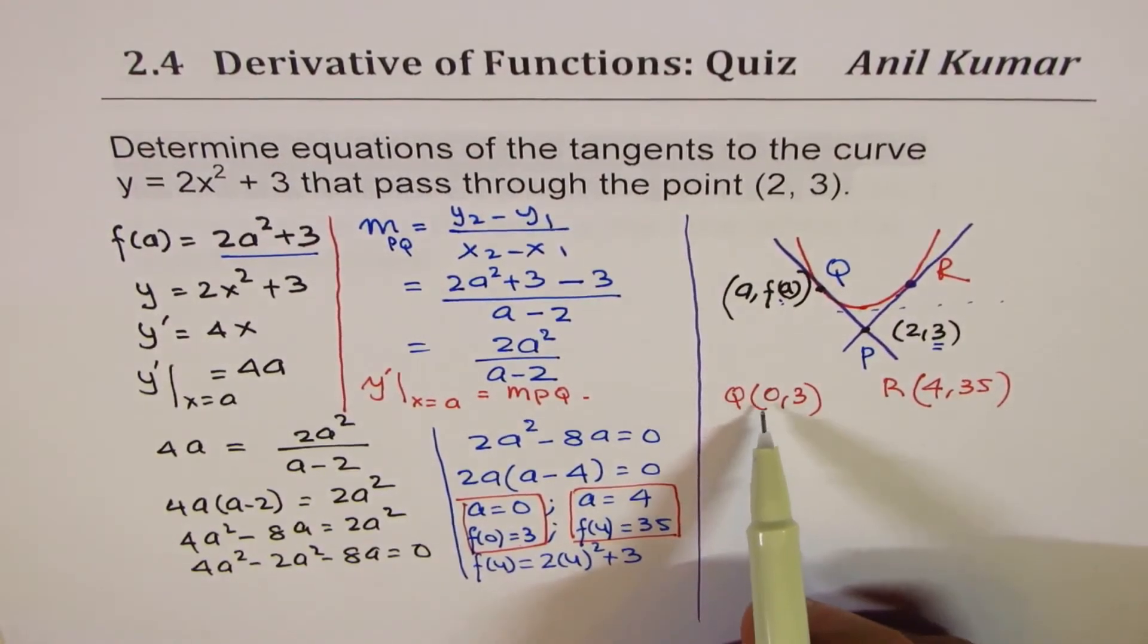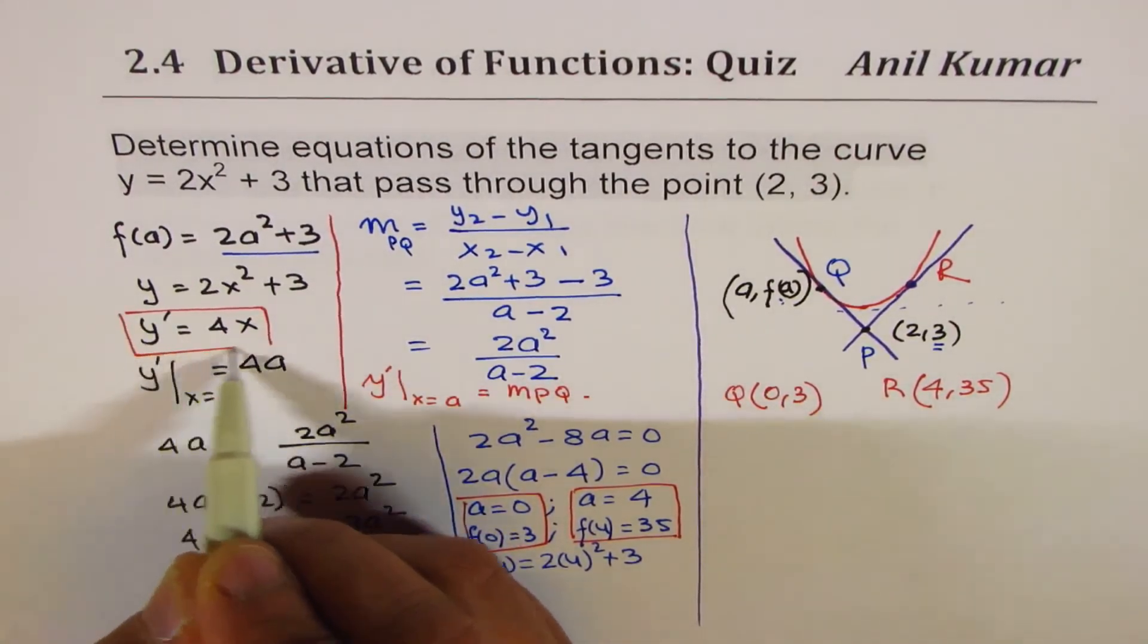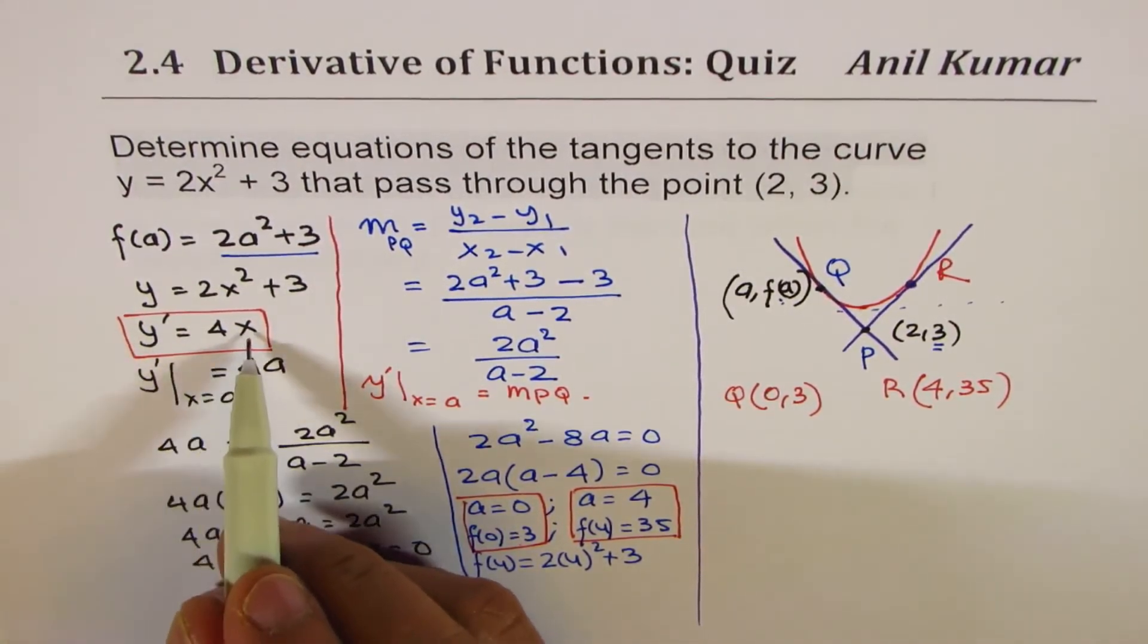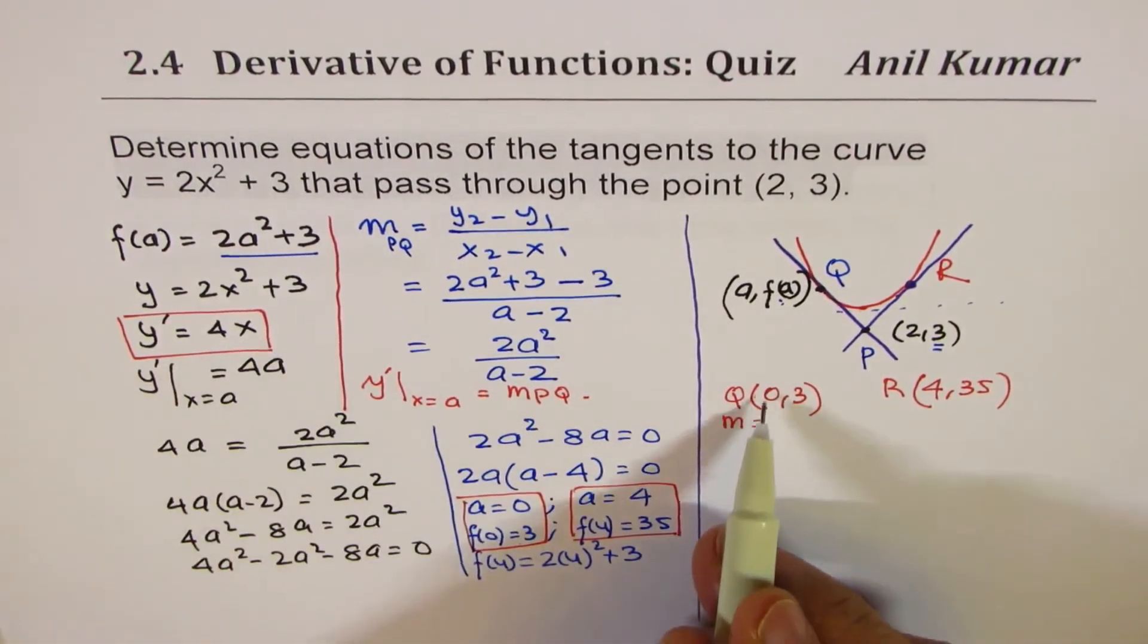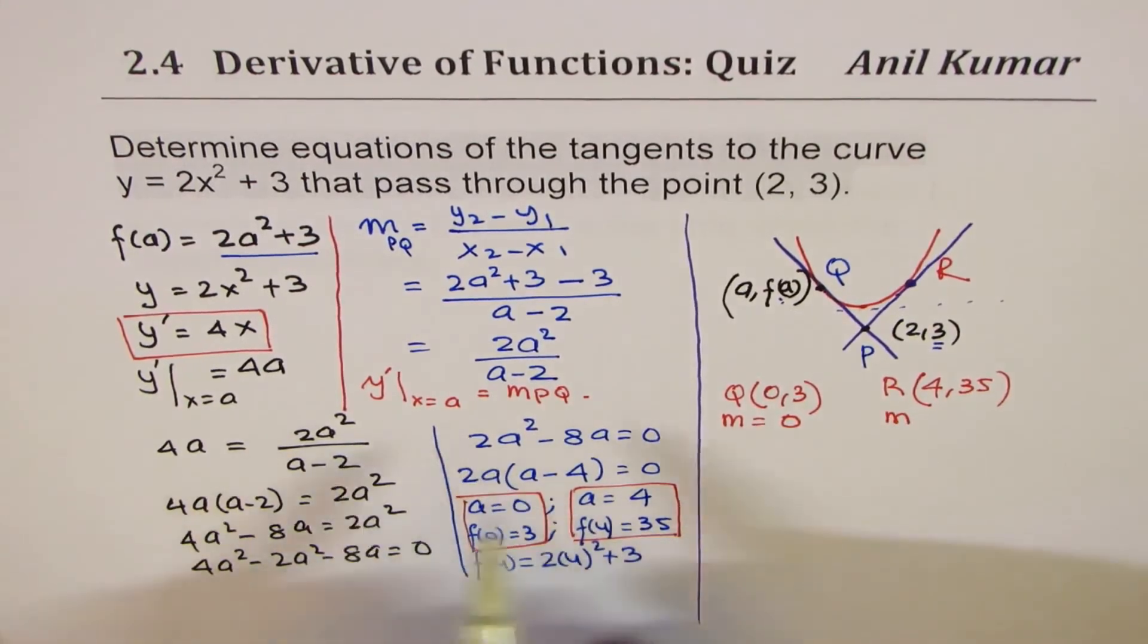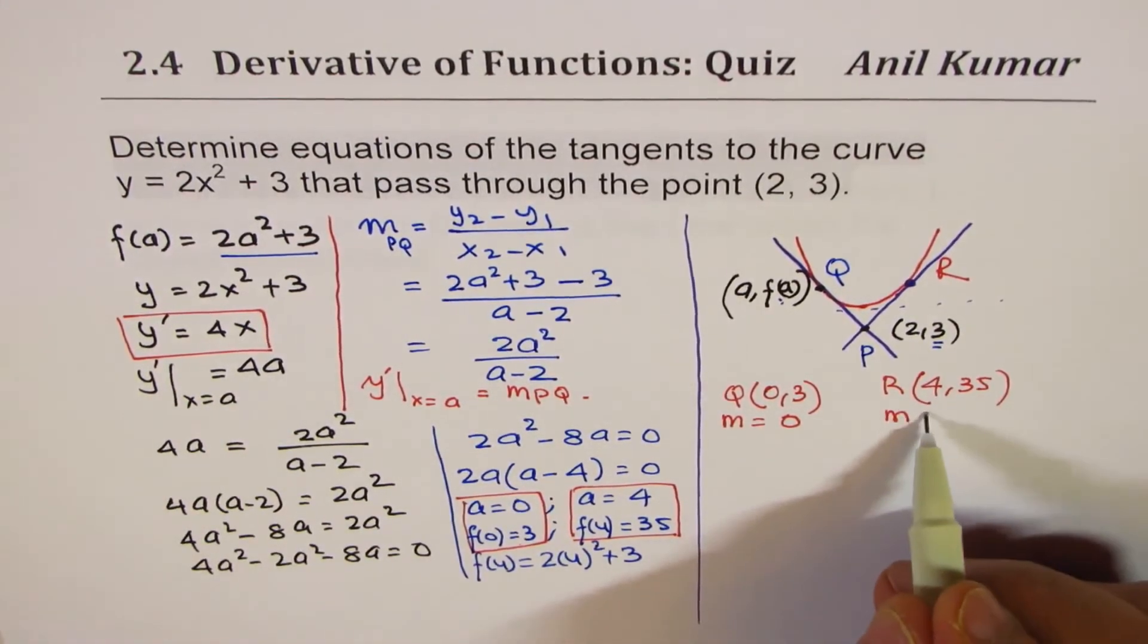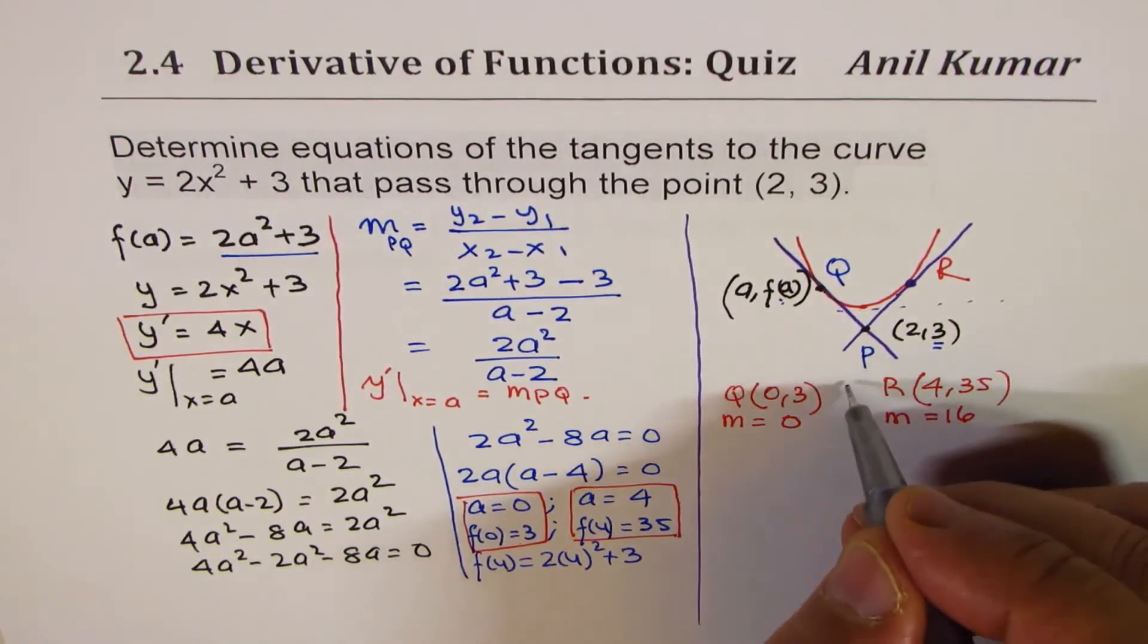Now slope is given by this expression. y dash is 4 times the x value. So slope m in this case is 4 times 0, which is 0. And in this case, slope is 4 times 4, which is 16. So we have two different lines.